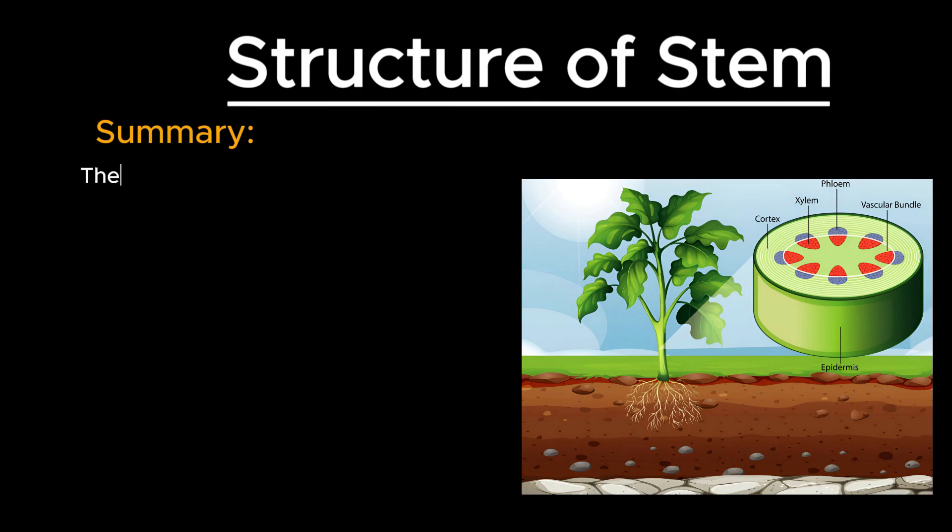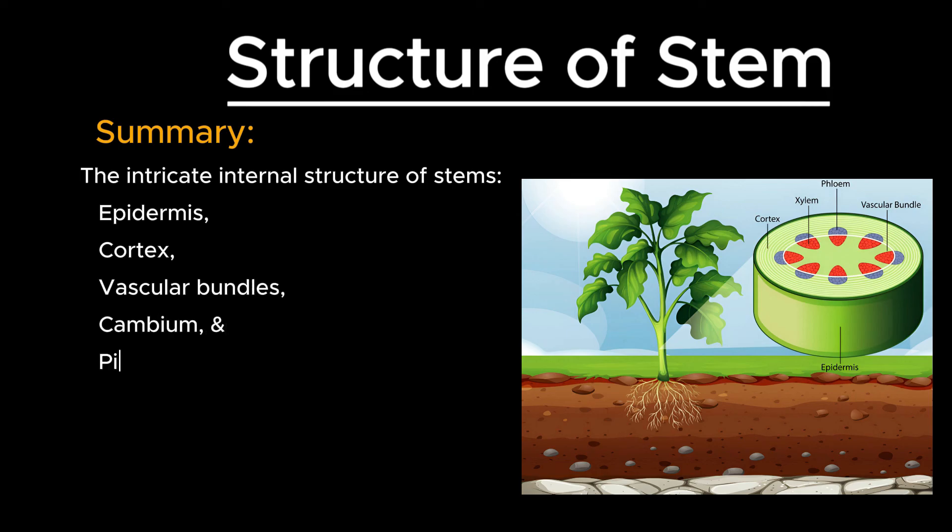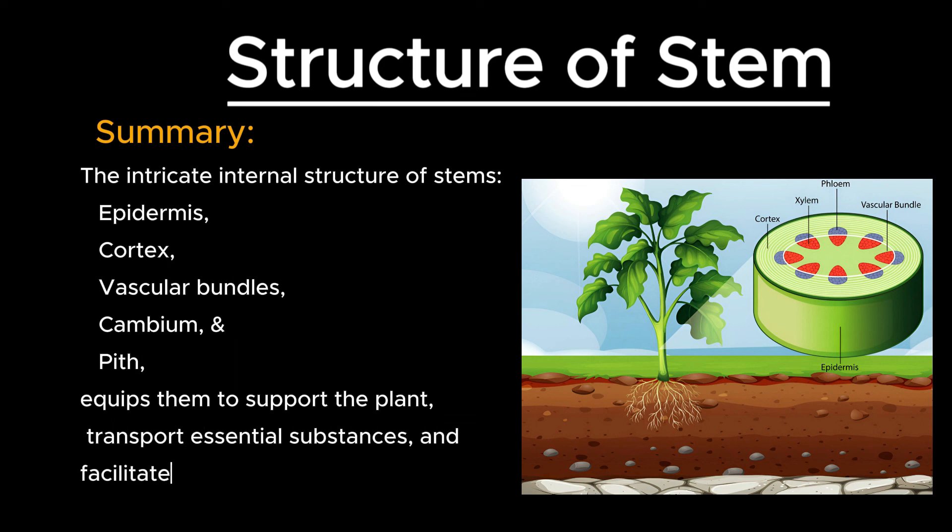So, the intricate internal structure of stems, comprising the epidermis, cortex, vascular bundles, cambium, and pith, equips them to support the plant, transport essential substances, and facilitate growth and storage. This sophisticated architecture highlights the stem's central role in maintaining plant vitality and enabling growth.